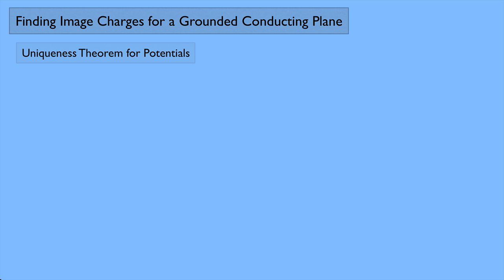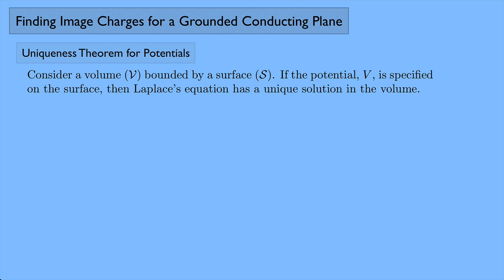I want to talk about something called the method of images, but first let's review a few things. The uniqueness theorem for potentials says if you consider a volume V bounded by a surface S, and if the potential V is specified on the surface, then Laplace's equation has a unique solution in the volume. Laplace's equation is where you take the del-squared operator and act it on the scalar potential V, and you should get zero.